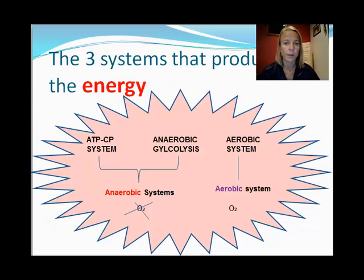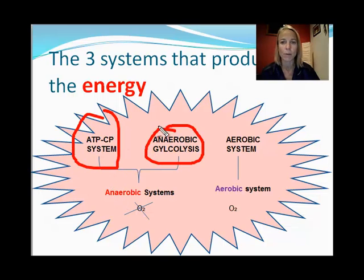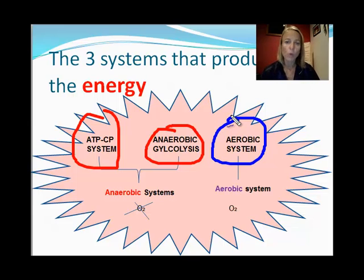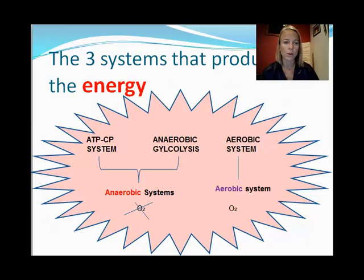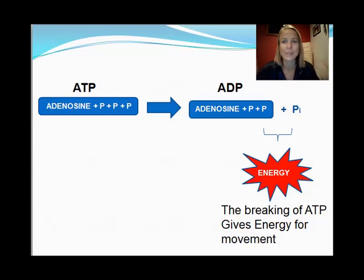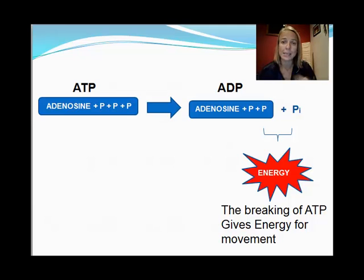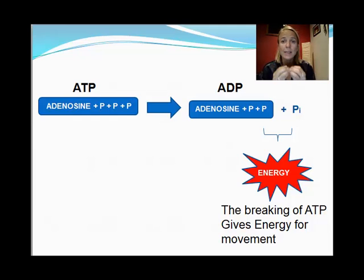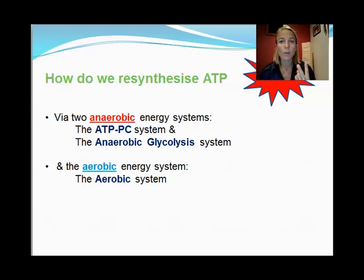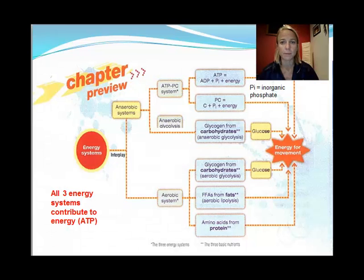The three energy systems are our two anaerobic energy systems — the ATP-CP system and anaerobic glycolysis — and our aerobic energy system, which uses oxygen. All three systems produce and contribute to ATP. ATP is adenosine triphosphate; when we break those three phosphates into adenosine diphosphate and an inorganic phosphate, that breaking of ATP gives us energy.